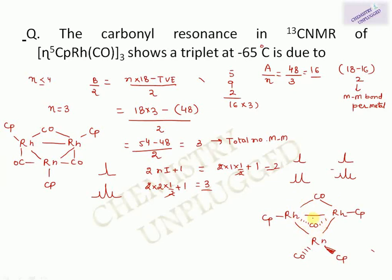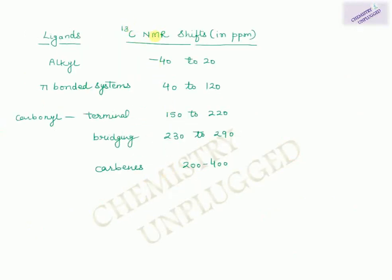Another CO arrangement on the same cluster framework gives three peaks because different CO environments arise from different trans influences with the Cp ligands. This illustrates how NMR patterns distinguish between complexes with the same molecular formula. The answer to the CSIR NET question is that the triplet is due to bridging CO (μ₂-CO).